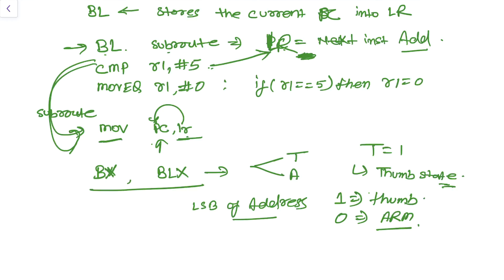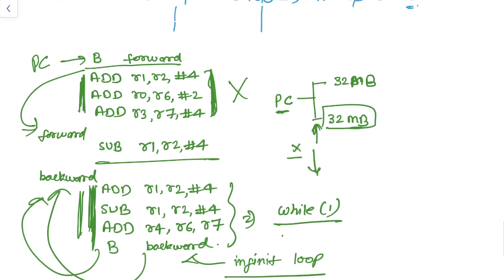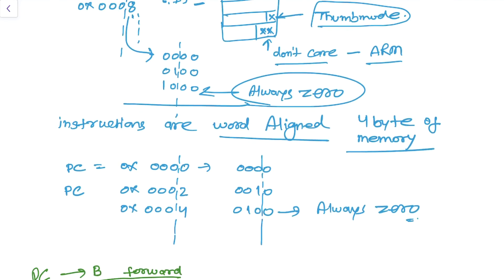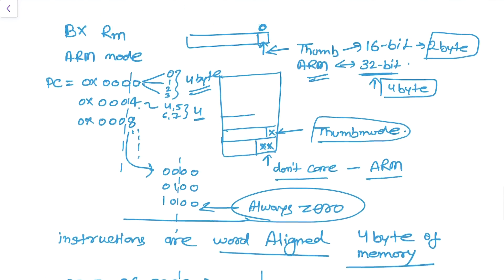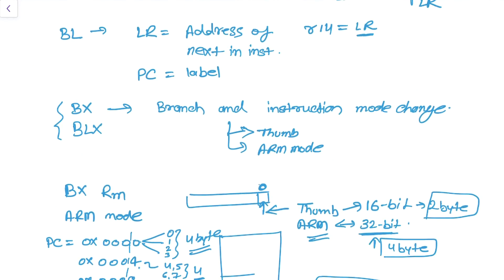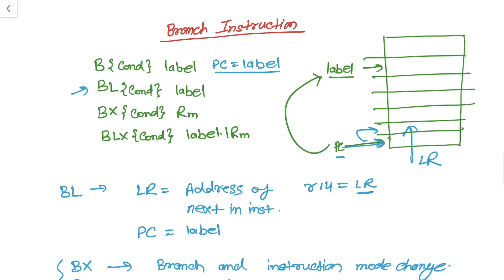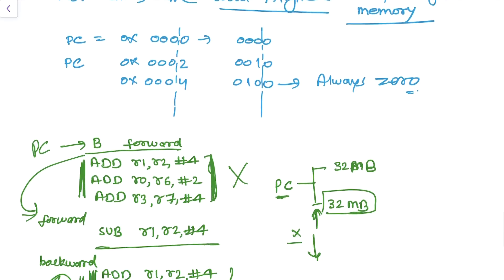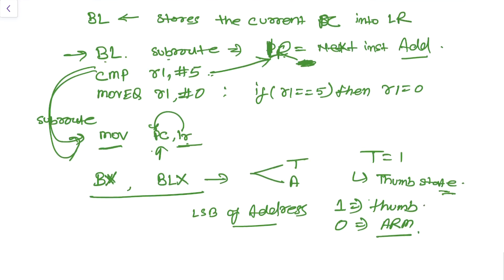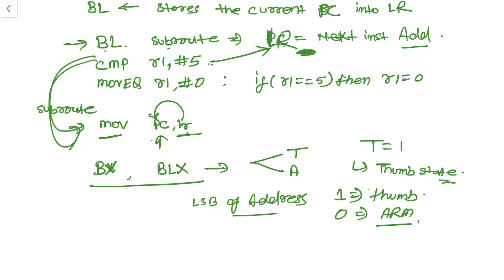In summary, this tutorial covered branch instructions, Branch and Link (BL) instructions, and how to change processor states using the least significant bit of a branch address. Thank you for watching — please subscribe to the channel to get updates. Bye!